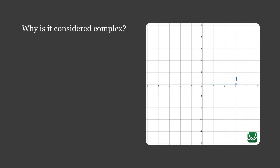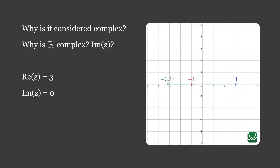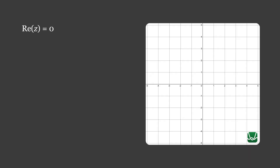There is a logical question that may arise from looking at the Argand diagram: if a number sits on the real axis, such as 3, then why is it considered complex? Let's try writing 3 in Cartesian notation. The real part Re(z) is equal to 3. It has no imaginary part, so Im(z) equals 0. Therefore, z equals 3 plus 0i. A complex number with an imaginary value of 0 is considered to be a purely real complex number. Likewise, if a complex number has a real value of 0, such as z equals 0 plus 3i, it is confined within the imaginary axis and is classified as purely imaginary.